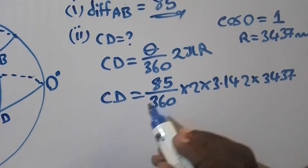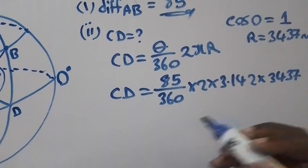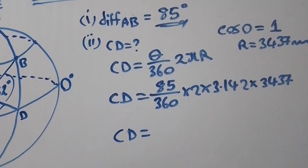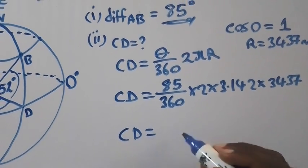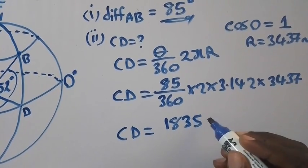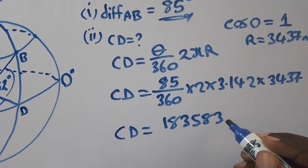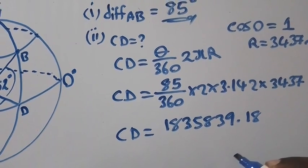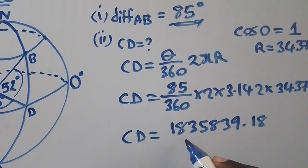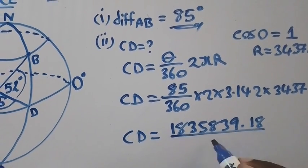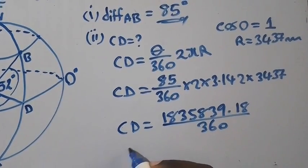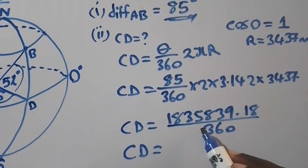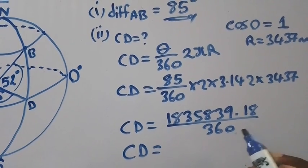So at this stage, it is just the method of getting your calculator and you punch everything. Punch what is on the numerator to follow BODMAS. So if we punch on the calculator, we are having 1,835,839.18. So that's the figure: 1 million, 835 thousand, 839.18 over 360.